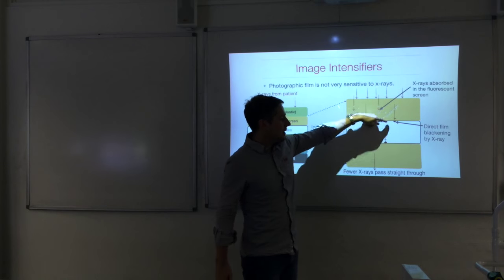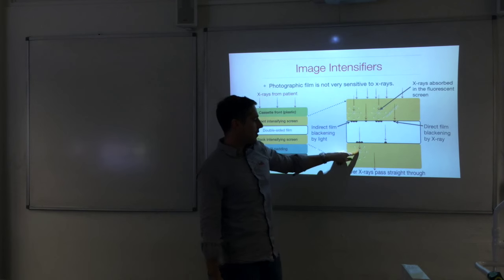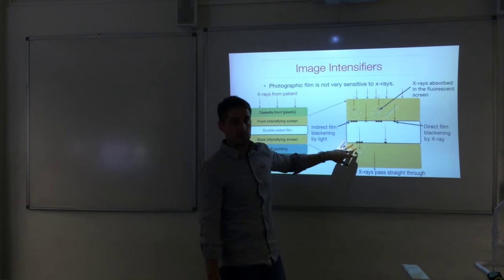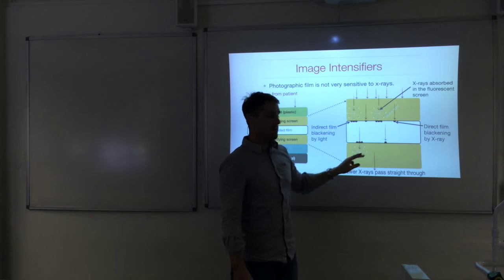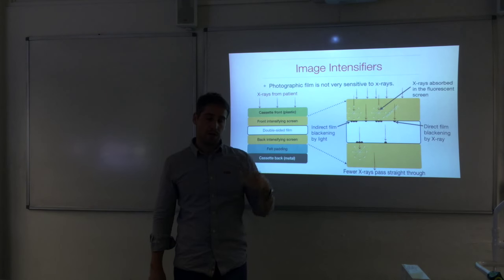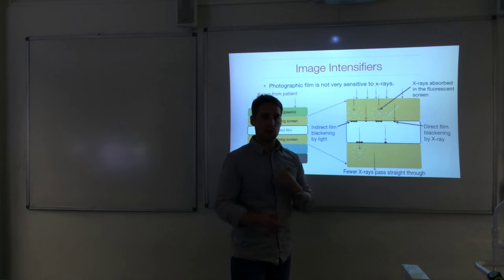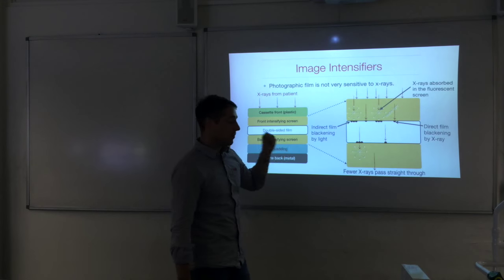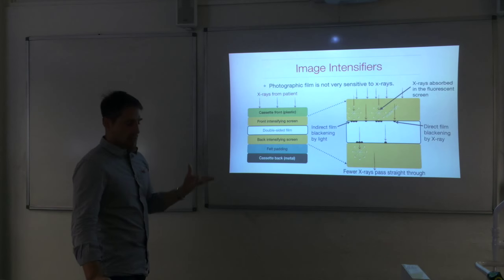There is also blackening on the rear of the photographic film from the screen behind it. Because x-ray photons are absorbed in the intensifying screens, fewer pass straight through without contributing anything. This is a double positive: we get many visible photons which darken the film more quickly, and there are fewer x-rays that pass through and do nothing. That's how image intensifiers work.